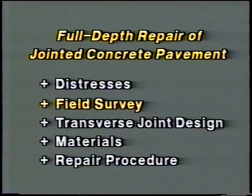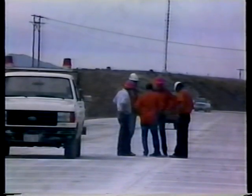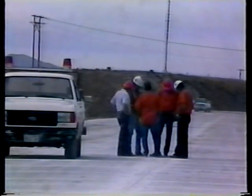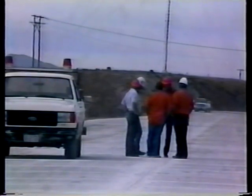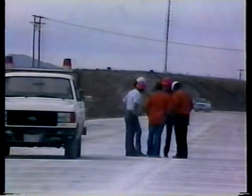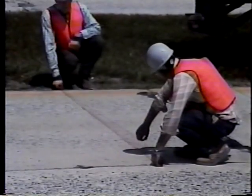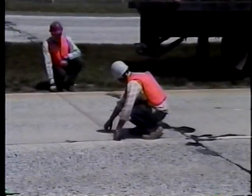A field survey should be made during planning to identify the repair locations and the extent of rehabilitation necessary. This can be accomplished by a trained crew performing a condition survey for the entire project. The survey should be conducted as close to project bidding as possible to accurately determine areas needing repair. Later, but before any work begins, the boundaries of each repair must be defined and clearly marked on the slab surface.